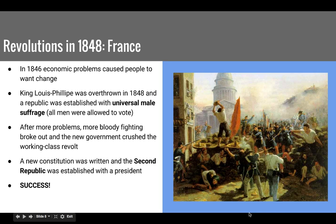These revolutions begin in France, where economic problems in 1846 caused the people to become very upset with their constitutional monarchy. They overthrew King Louis-Philippe in 1848, and the Second Republic was established in France, with universal male suffrage — meaning all men were allowed to vote. More bloody fighting broke out, making it a devastating revolution in terms of lives lost. Ultimately, a new constitution was written, the monarchy was done away with, and the Second Republic was established with a president.